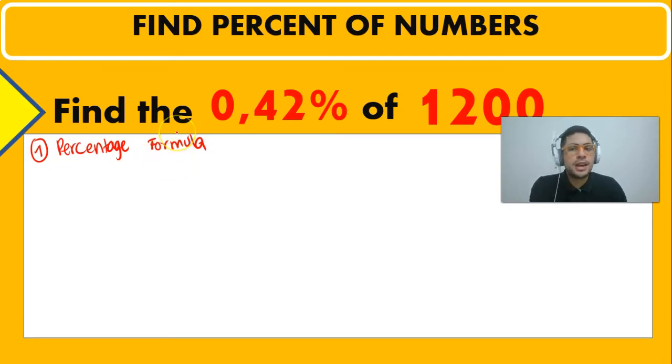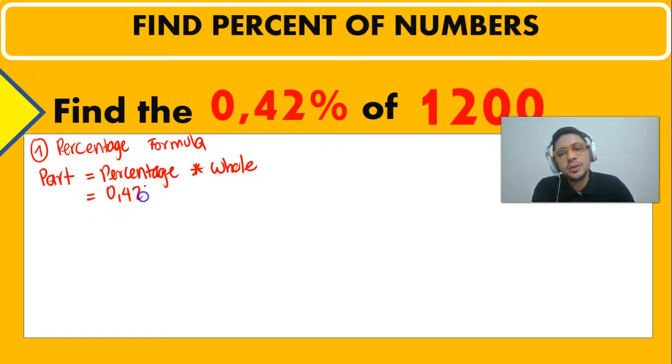So remember, when they are asking us to find the percentage of a number, so the 0.42% of 1,200, we know that they are asking us to find the part. So the part is going to be equal to the percentage multiplied by the whole or the total number. The percentage is 0.42% and the whole is going to be 1,200.